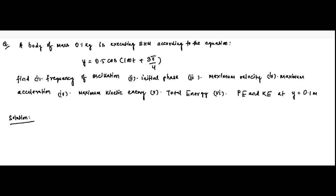Here is another question on energy of an object undergoing simple harmonic motion. A body of mass 0.1 kg is executing SHM according to the equation y = 0.5 cos(100t + 3π/4), where y is the instantaneous position. We have to find the frequency of oscillation, initial phase, maximum velocity, maximum acceleration, maximum kinetic energy, total energy, and potential and kinetic energy at y = 0.1 meter.